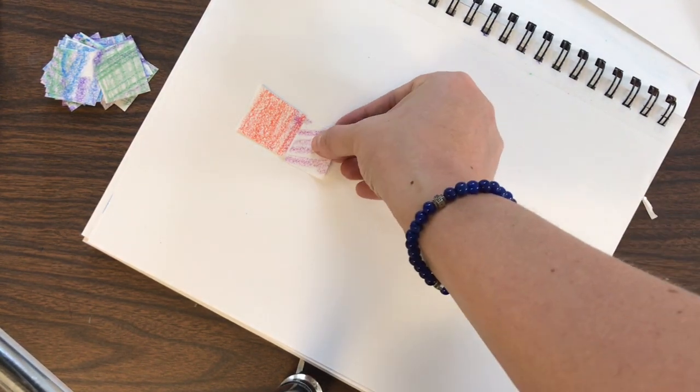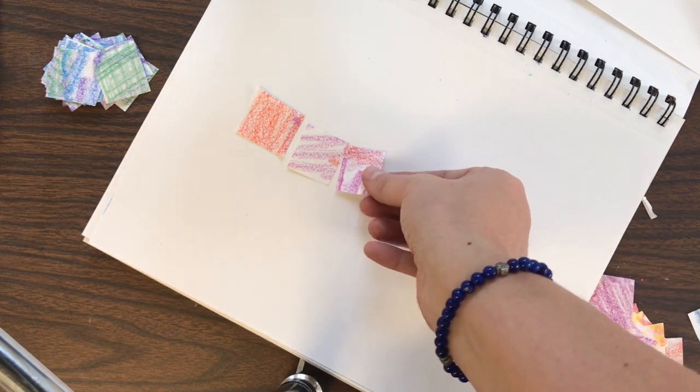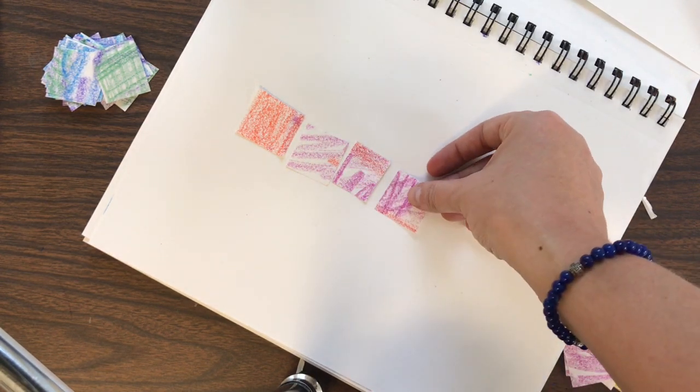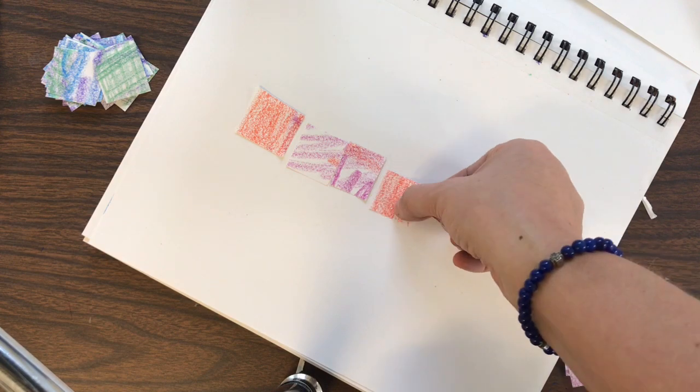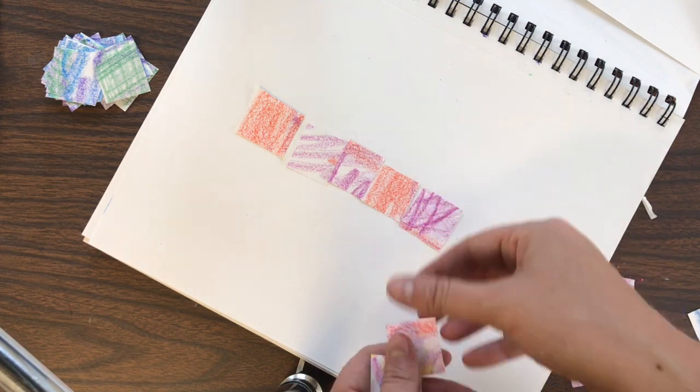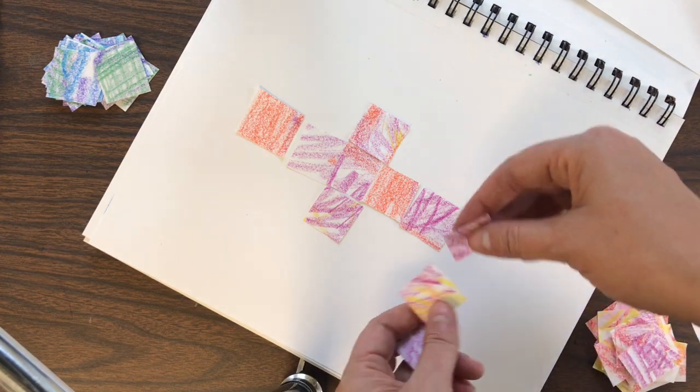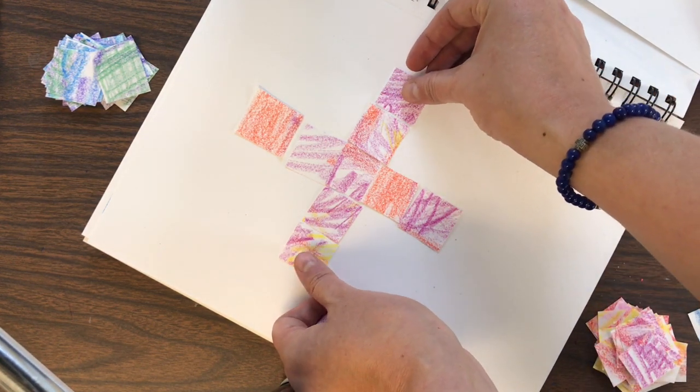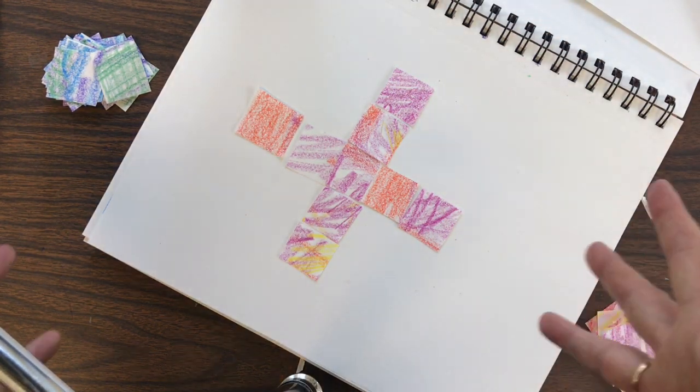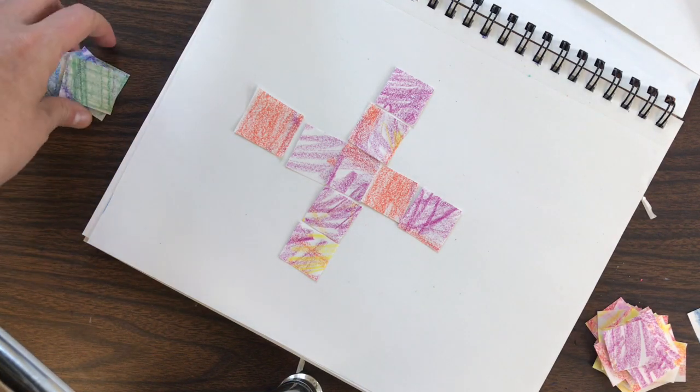So you can choose if that's the project you want to make or if maybe you want to make something a little different. Decide now if you want to put all of your colors that are the same next to each other or if you want to have some different colors. We're not reassembling a puzzle. We want it to look a little different.